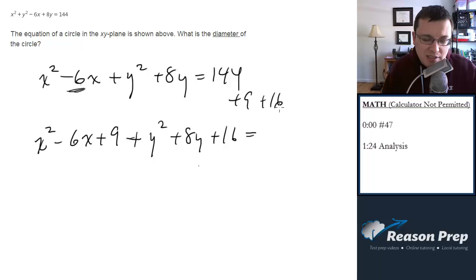So what do I get over here? 144 plus 16 is 160 plus 9 is 169. Now I'm going to go ahead and factor these. This is the same thing as x minus 3 squared. This is the same thing as y plus 4 squared equals 169.